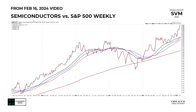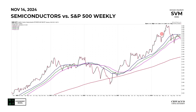This is a weekly chart of semiconductors relative to the S&P 500, dated February 15, 2024, covered in the February 16, 2024 video. Back in February, we had that left shoulder, inverted head, right shoulder look, and after that bullish pattern, semiconductors outperformed significantly.